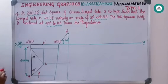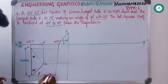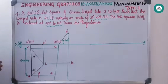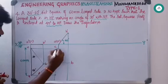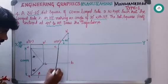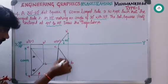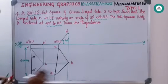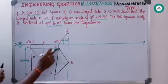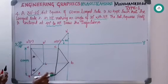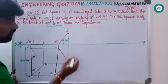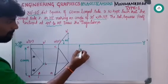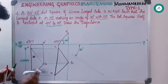After projecting, meet the points — this is A, B, and C — then join A, B, and C to get the apparent length. Next, the resting edge is inclined at an angle of 30 degrees to VP. Draw a 30 degree line.